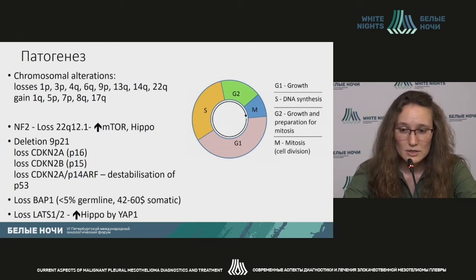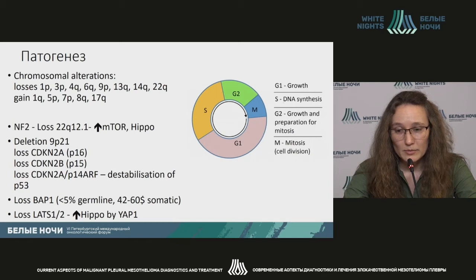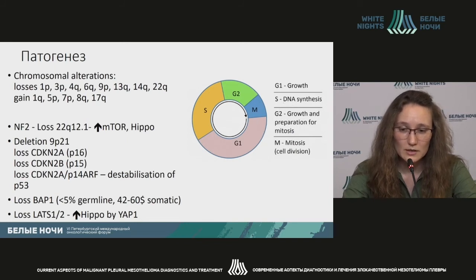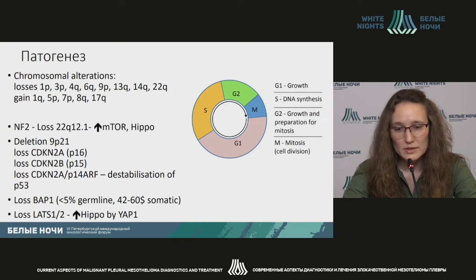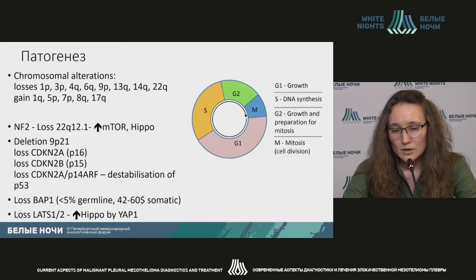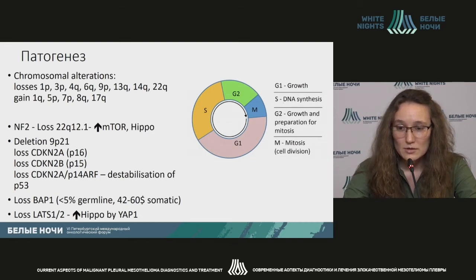We know the oncological functions of p53 well. In mesotheliomas, we see functional loss of p53 in the absence of mutation in the gene of this protein, and the cells acquire the property of uncontrolled multiplication. Less than one percent represents germline losses of protein function due to different rearrangements — parts of the coding chromosome are lost. Besides, there are point mutations and deletions, and up to 60% of somatic BAP1 mutations in mesotheliomas are present, more frequently in the epithelioid type.